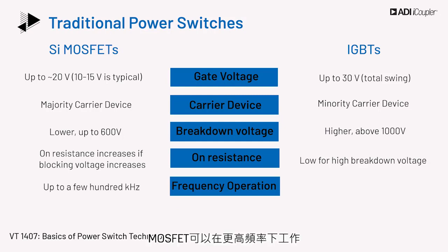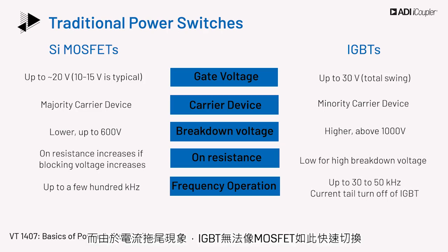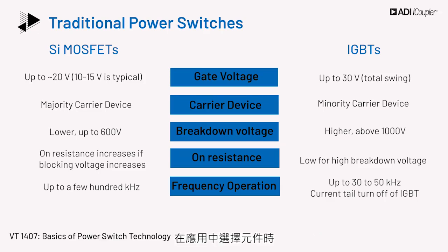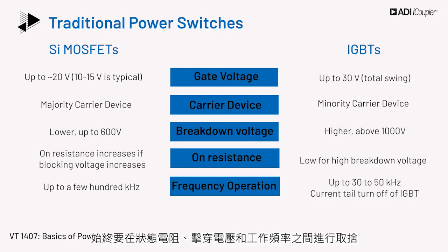The MOSFET can operate at higher frequency, whereas due to current tailing, IGBTs cannot switch as fast as the MOSFET. The trade-off is always between on-resistance, breakdown voltage, and operating frequency when choosing a device in an application.